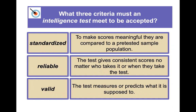An intelligence test must meet three criteria: it must be standardized, reliable, and valid. Standardized means scores are compared to a pre-tested sample population. The Stanford-Binet, WISC, KABC, and Woodcock-Johnson Test of Cognitive Ability go through years of preparation and standardization before being administered broadly, which is why they are expensive and restricted to licensed psychologists or physicians.